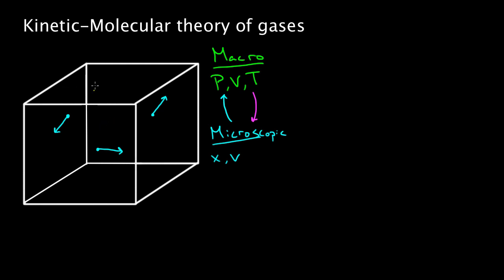First we have to make a few assumptions. One assumption is that these molecules don't really interact, and if they do interact, it would only be because of a collision. If there is a collision between these molecules, we have to assume it's elastic — kinetic energy will be conserved and momentum will be conserved. Similarly, if one of these molecules strikes the wall of the container, that collision should also be elastic. There should be no kinetic energy lost.